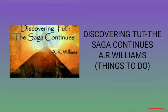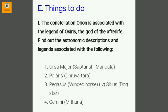Today I will discuss the 'Things to Do' portion of the story 'Discovering' — The Saga Continues, written by A.R. Williams. The task is to find out the astronomical description and legends associated with the following: Ursa Major (Saptarishi Mandala), Polaris (Dhruvatara), Pegasus (Winged Horse), Sirius (Dark Star), and Gemini (Mithuna).